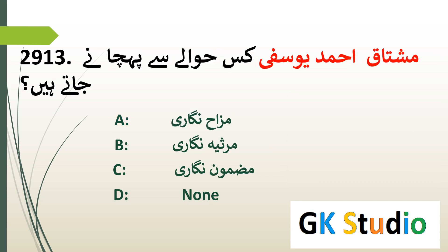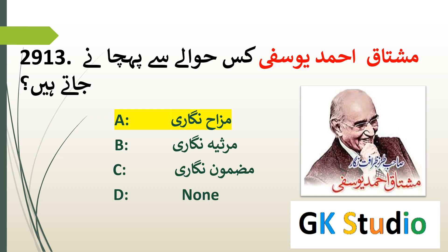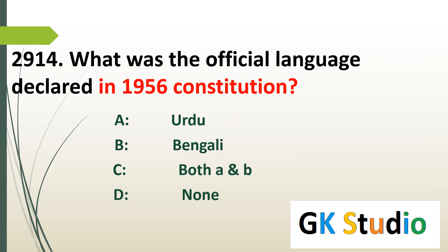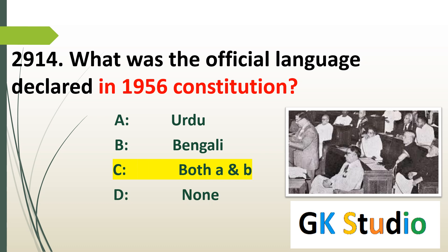Mushtaq Ahmed Yusufi kis hawale se pehchane jate hain? Mushtaq Ahmed Yusufi Urdu ke mashhoor mazah nigar hain. What was the official language declared in the 1956 Constitution? Both A and B — Urdu aur Bengali ko 1956 mein qaumi zubaan ka darjah Pakistan mein diya gaya.